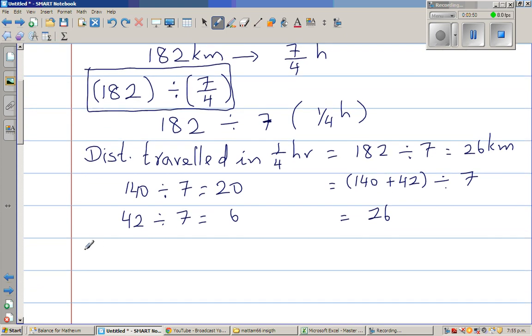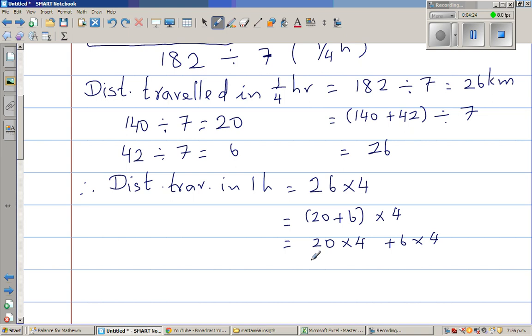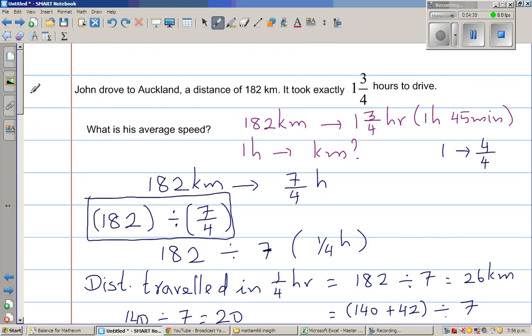So therefore distance travelled in one hour would be - one hour has four quarter hours. So this is 26 times four, which is 20 plus six times four. This is 20 times four plus six times four - the distributive property. Which is 80 plus 24, which is 104 kilometers. So he travelled in one hour, 104 kilometers. So the answer here, you can write the average speed is 104 kilometers per hour.